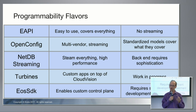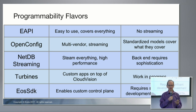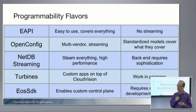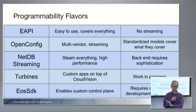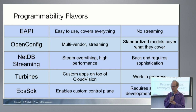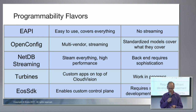There are actually now five different programmability platforms in EOS. This is a summary slide for reference — I'll cover all the content in the next five slides.